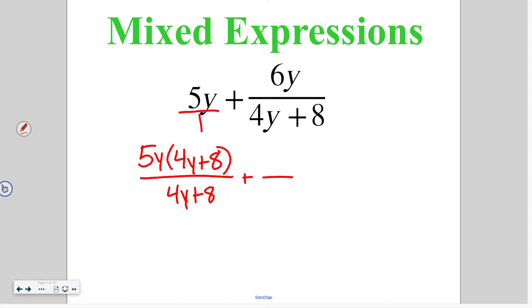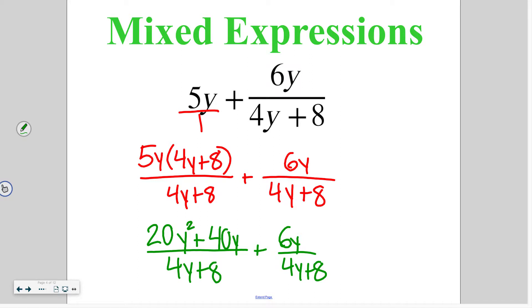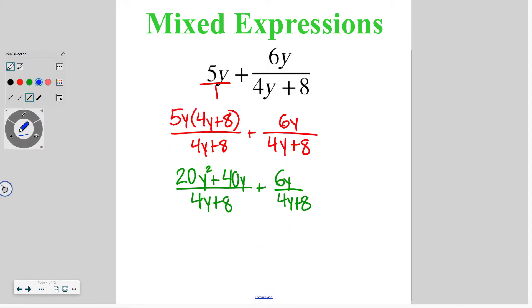And then the second one, nothing is changing because we already have my denominator of 4y plus 8 so the 6y stays up top. Then we need to do distributive property. So I've got 4 times 5 which is 20y squared plus 5y times 8 which is 40y, and then that stays over our common denominator of 4y plus 8, and then 6y over 4y plus 8. Then I'm going to go ahead and add those values. So I've got 20y squared plus 40y plus 6y which gives me plus 46y over 4y plus 8.